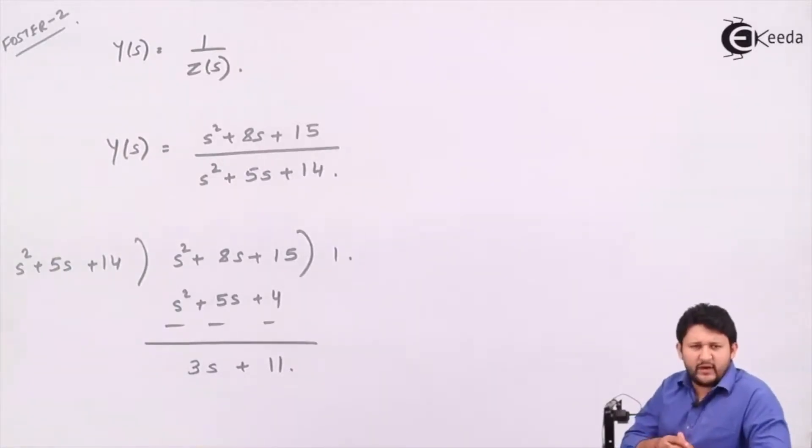So let's have a look at Foster 2 RL function. When I talk about Foster 2, I need to apply partial fraction. But for applying partial fraction, the function should be in terms of y(s), not z(s). The relation between y and z is inversely proportional to each other. In the question paper you will be getting z(s), we have to invert that to get y(s).